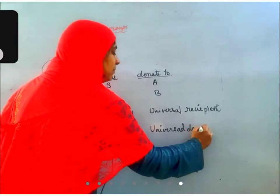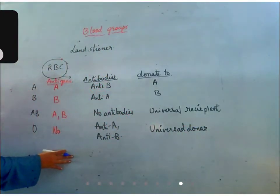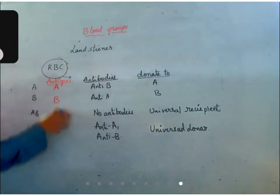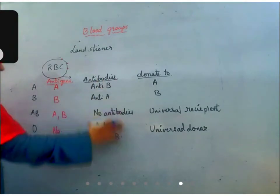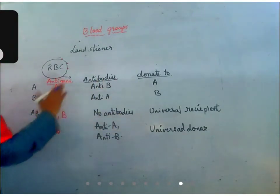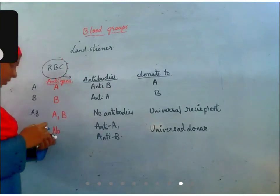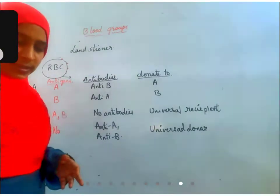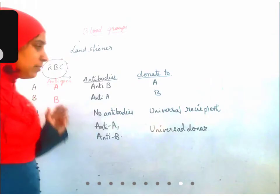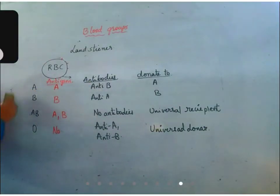To remember this table, this information is enough. What are the antigens? Exactly same as the blood group. What are the antibodies? Opposite to the antigens. But to understand the reason behind this, you should understand antigen-antibody reactions.